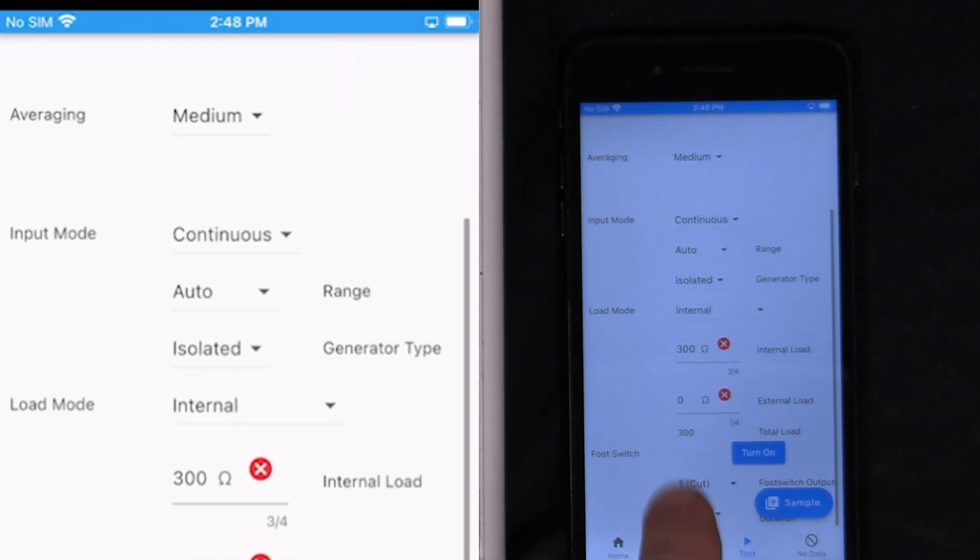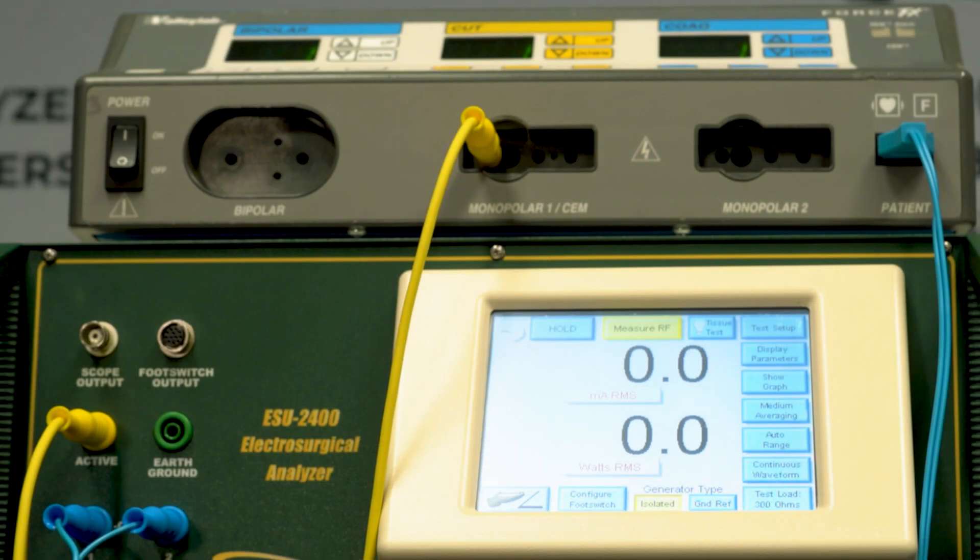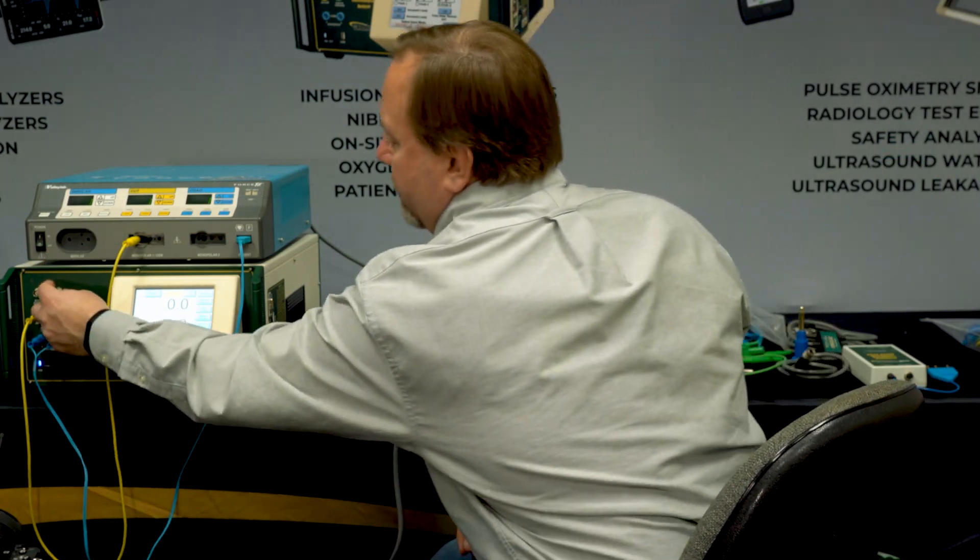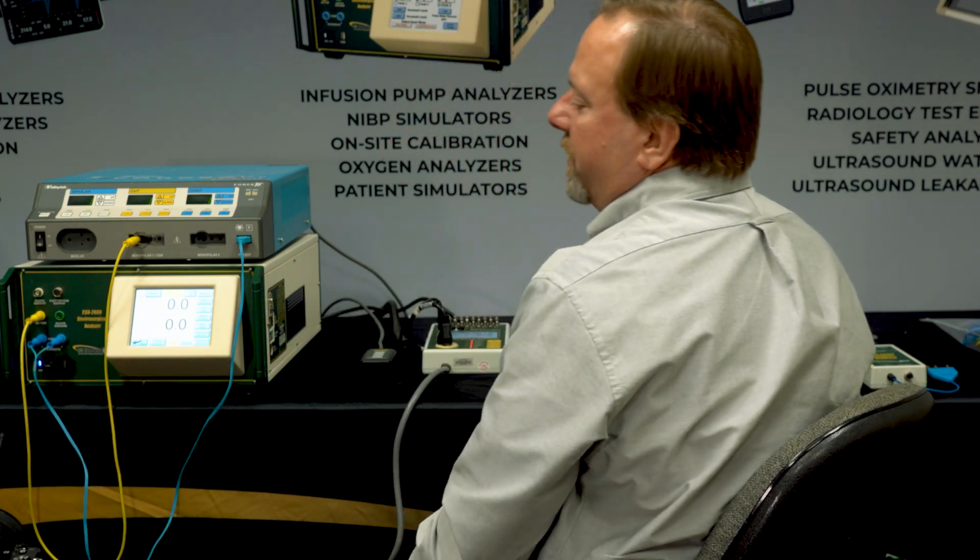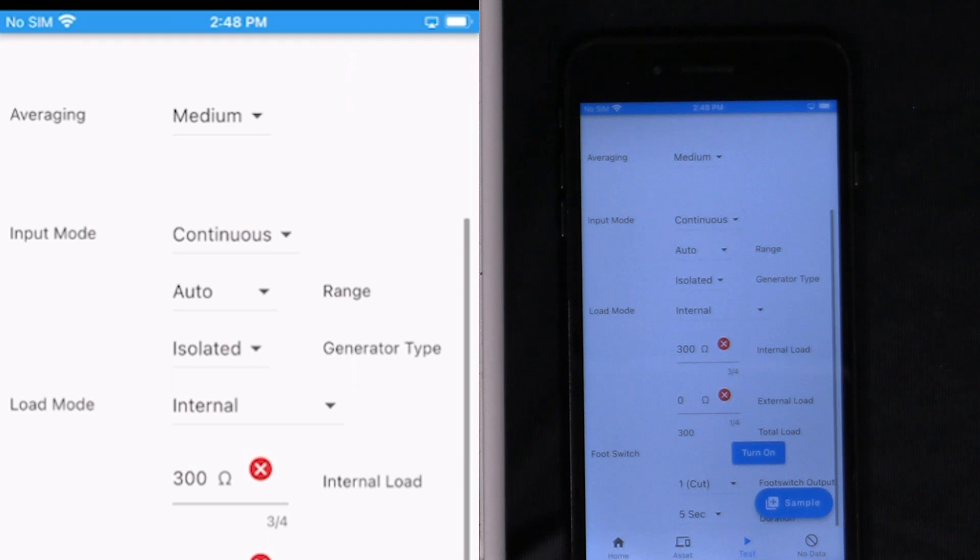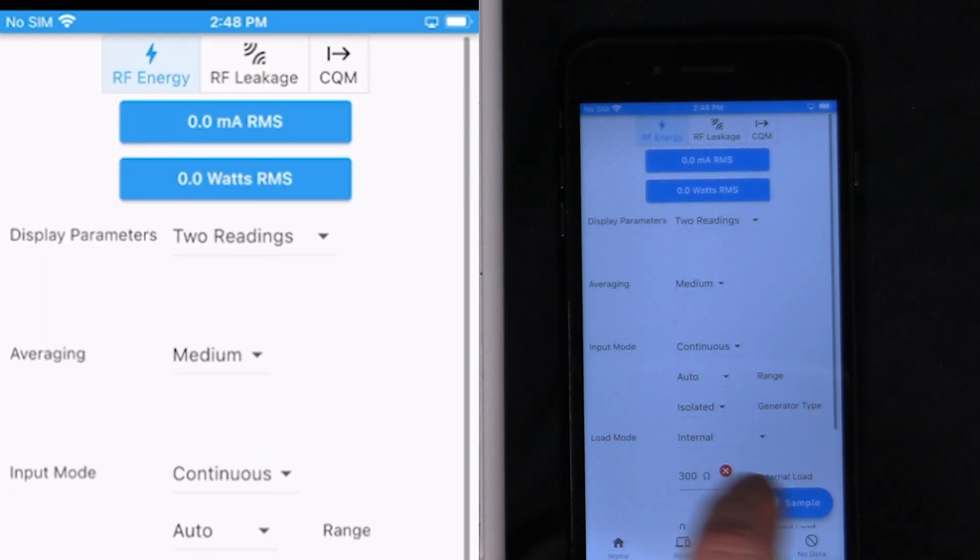We can activate the foot switch directly from the MyBC Mobile app. That's just like pressing the foot switch trigger here. That would require me to have one of the foot switch cables plugged into the foot switch output of the 2400 to trigger the generator. But we have the foot switch simulator plugged into the generator. So all I have to do is press these buttons on that simulator. Now we've got measurements shown on the screen for milliamps and watts.